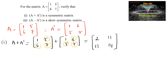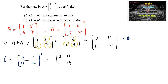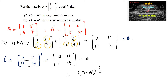Let us consider this matrix as B, so B = [[2,11],[11,14]]. Then B transpose is the transpose of [[2,11],[11,14]], which gives [[2,11],[11,14]] — interchanging rows and columns, the first row becomes first column and second row becomes second column. These two matrices are the same, so (A + A^T)^T = A + A^T. Therefore, A plus A transpose is a symmetric matrix.